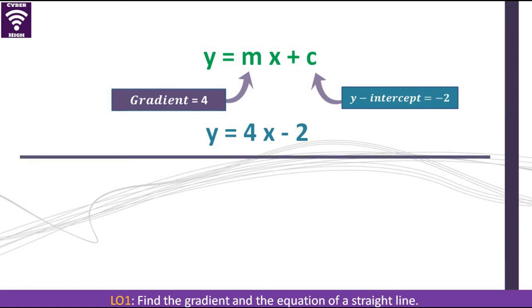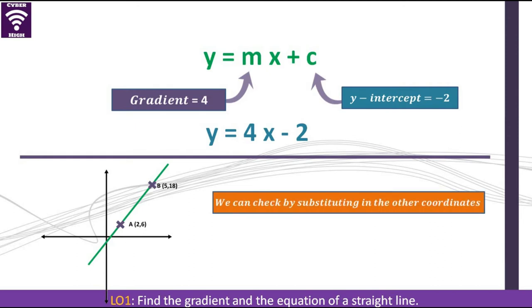If we take any of the points and substitute into this expression, we should be able to get the same answer. Now that we used point A, we can also use point B to substitute into this same equation to see if the equal sign still maintains. So 18 is equal to 4 times 5 minus 2. This gives us 20 minus 2, and that will be 18 is equal to 18. If this equal sign has been confirmed like this, then we are sure our result was correct.